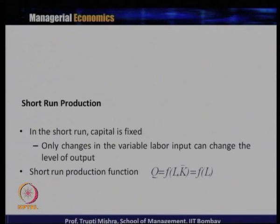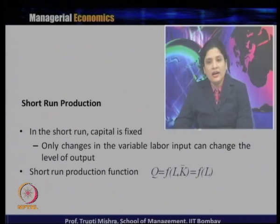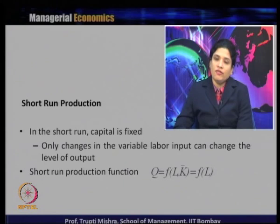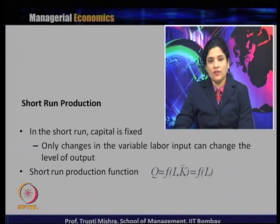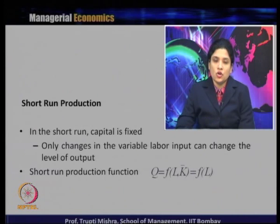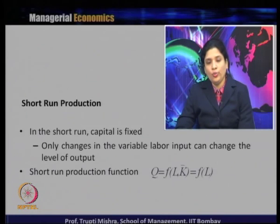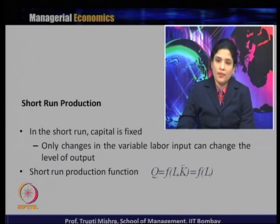In the short run, capital is fixed, so only changes in the variable labor input can change the level of output. The short run production function simplifies to q = f(L), because capital is held constant and all changes in q come from changes in labor.